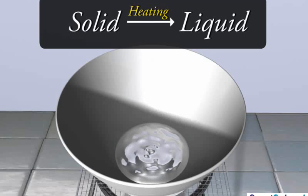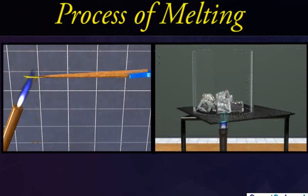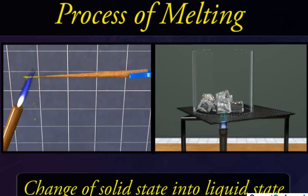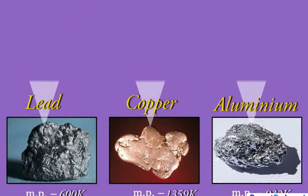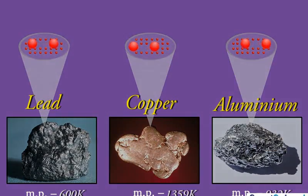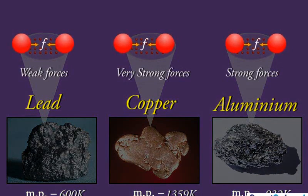It should be noted that the heat is supplied to the solid at constant pressure. This process of melting, that is, the change of solid state into liquid state is called fusion and the temperature at which the solid becomes liquid at atmospheric pressure is called its melting point. The melting point of a solid depends upon the strength of forces of attraction between the particles. Higher the strength of forces of attraction, higher is the melting point.